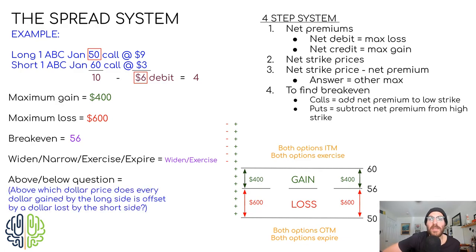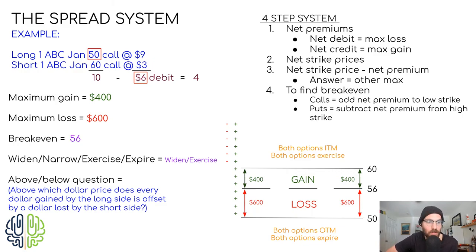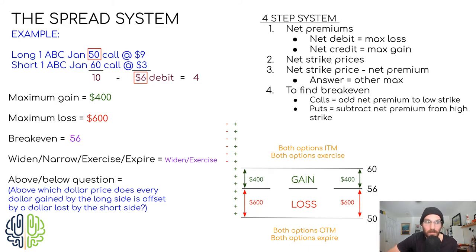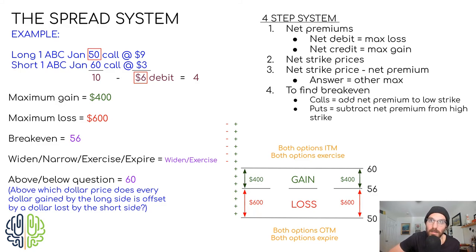The last part of this would be what I call the above/below question. It would sound something like this: 'Above which dollar price does every dollar gained by the long option get offset by a dollar lost on the short option?' What they're really asking is where do both options start offsetting each other in terms of gains or losses? If you're looking at the breakdown, it should be pretty obvious — it's 60. Once the market price goes above 60, every dollar gained on the long option is offset by a dollar lost on the short option.